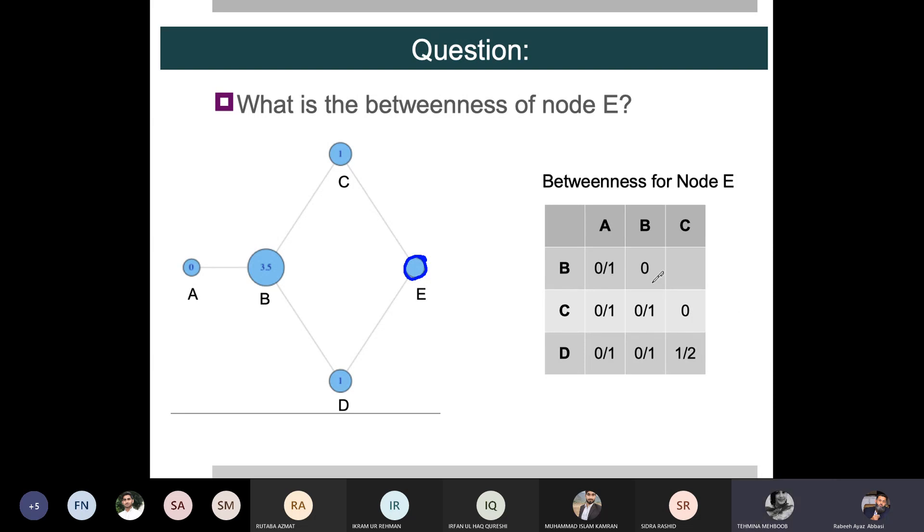So we can make this table. If we want directly, we can make this table. The rest of the pairs AB, AC, AD, BC, BD all have a shortest path that exists.